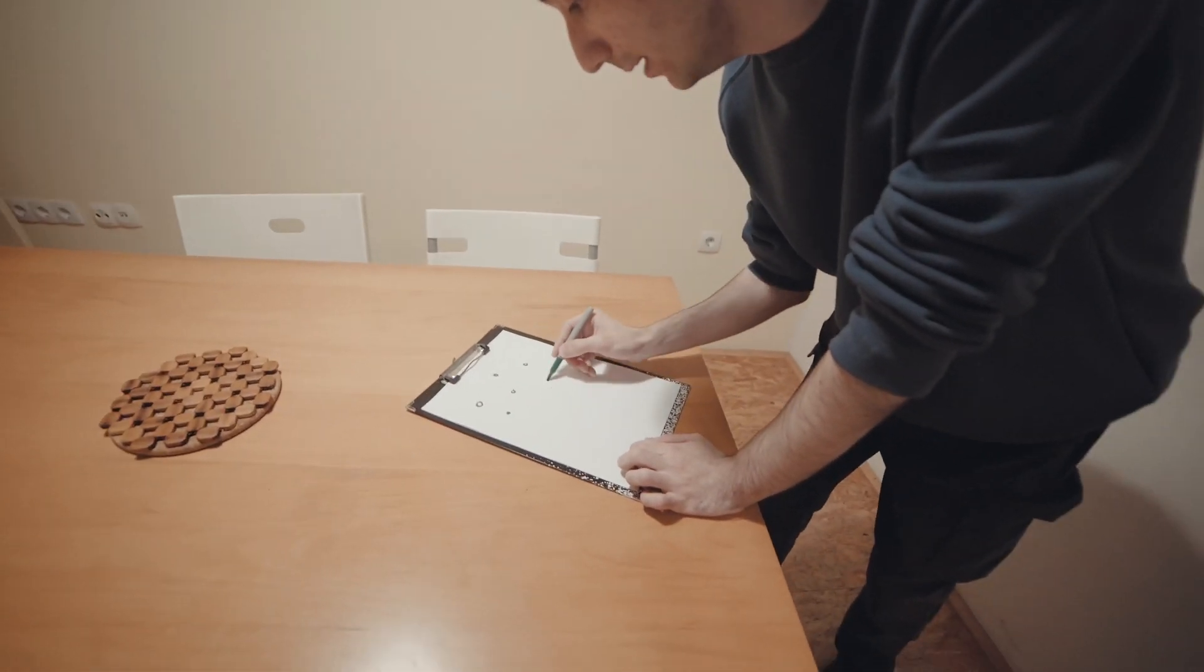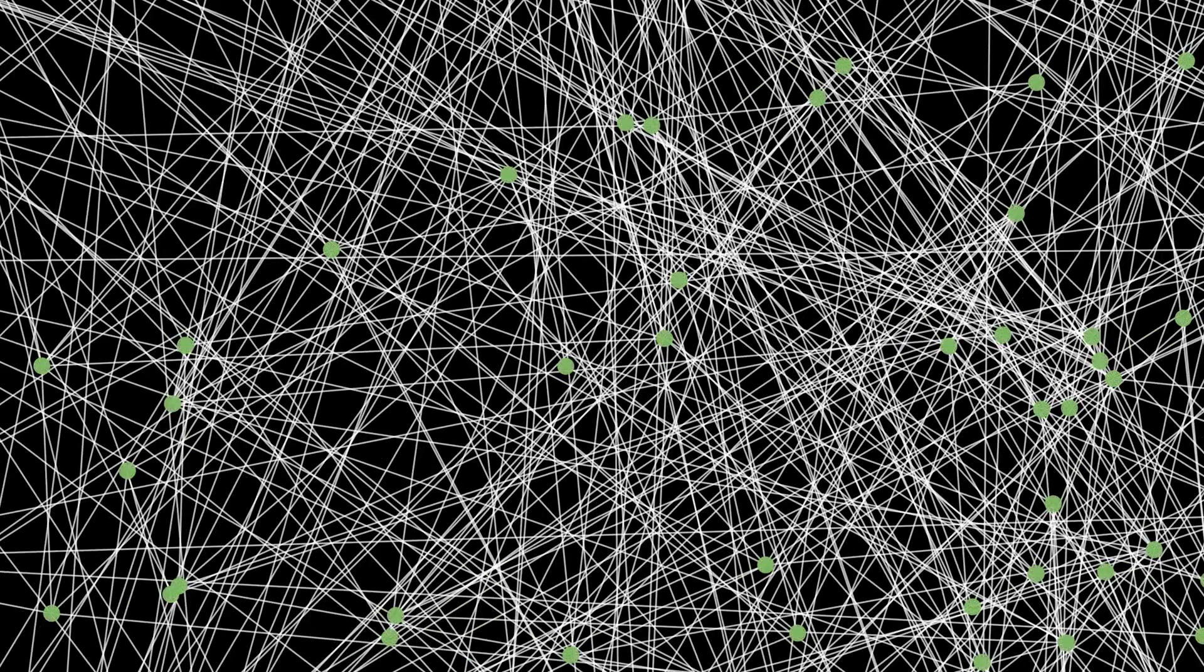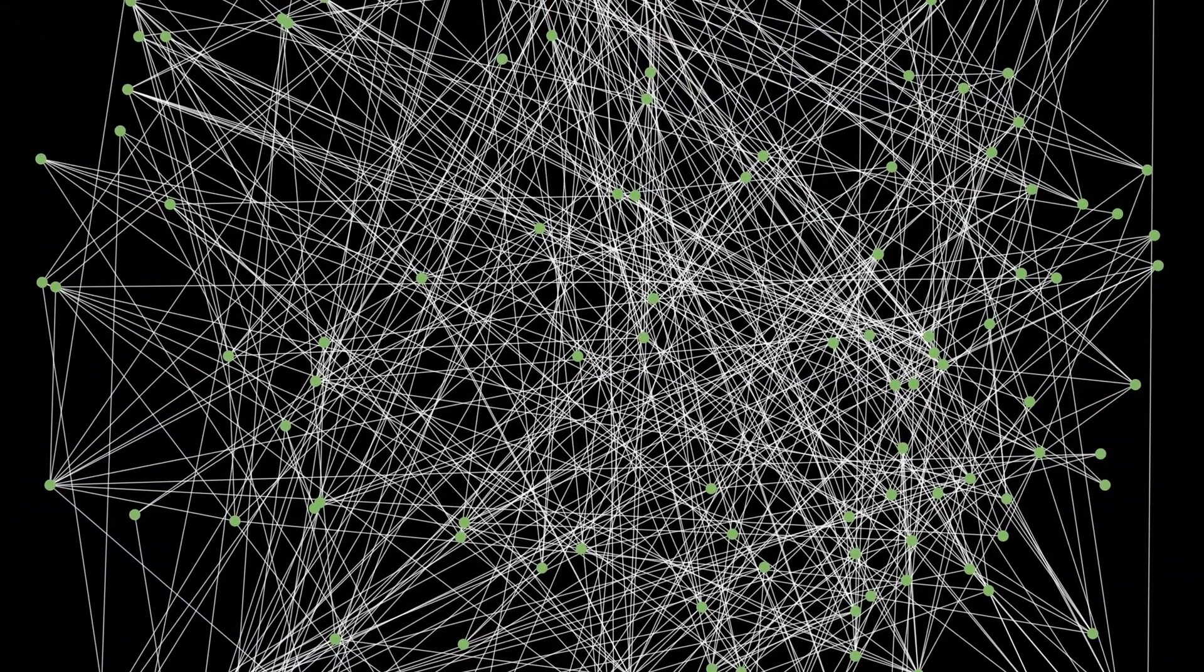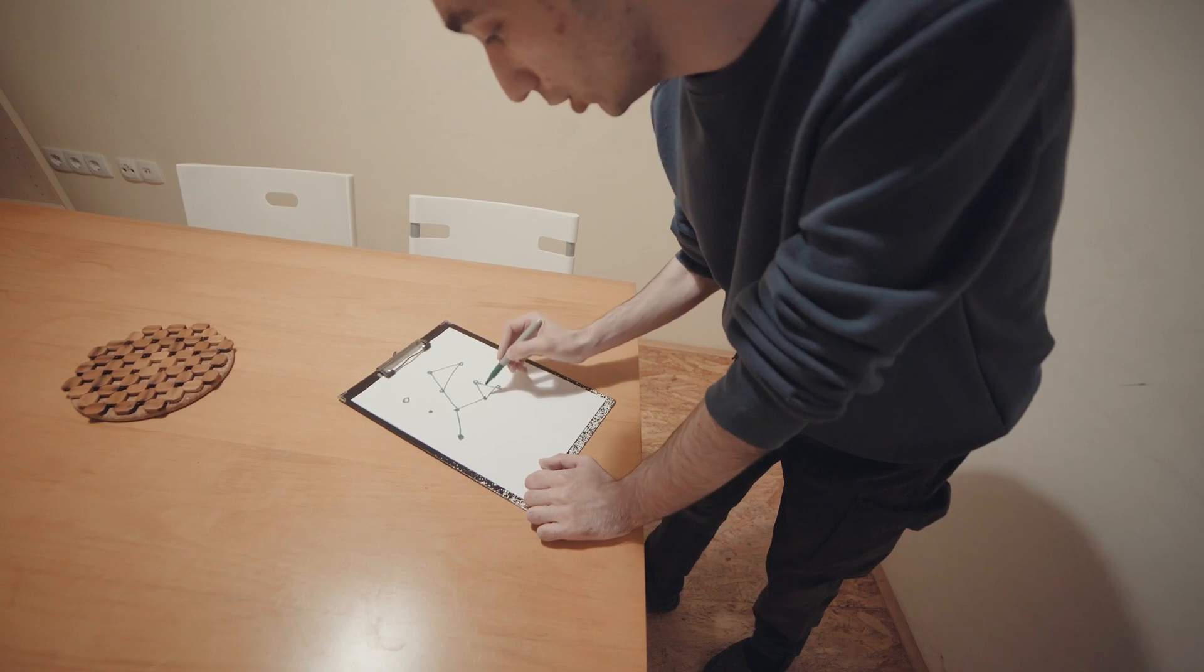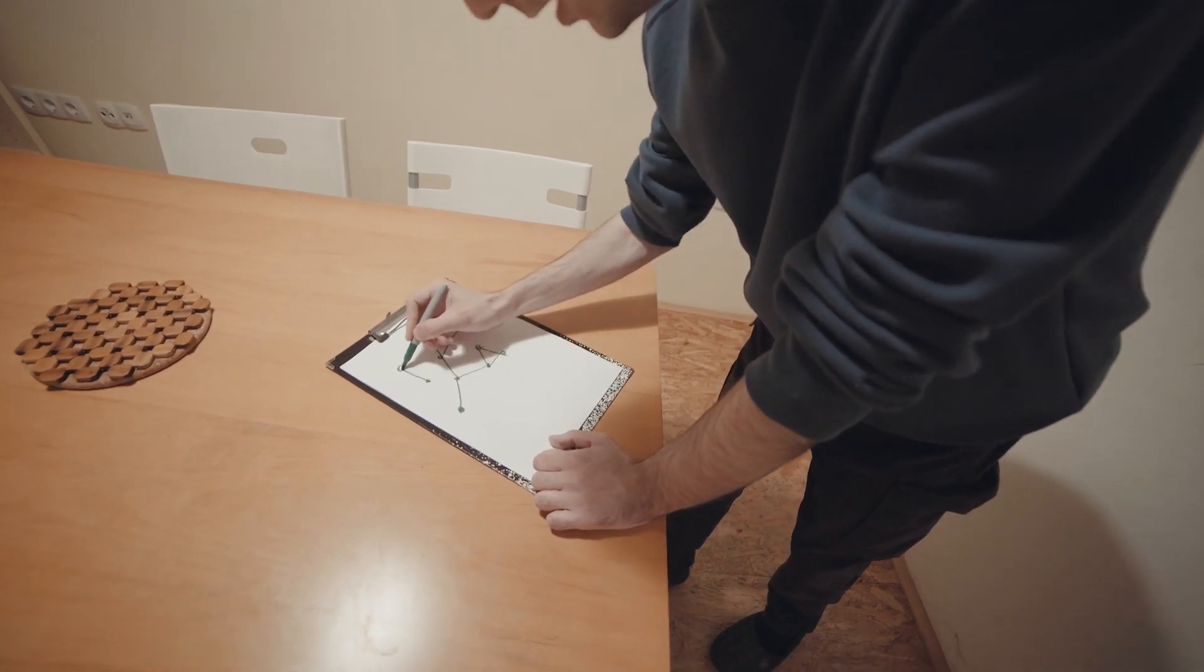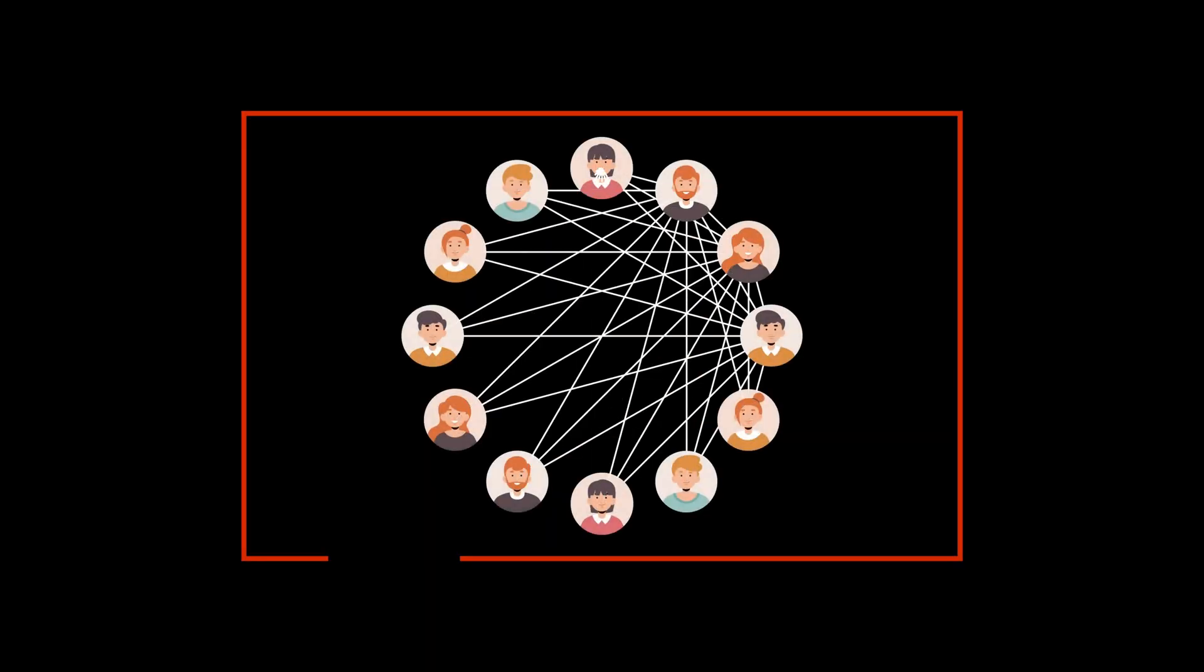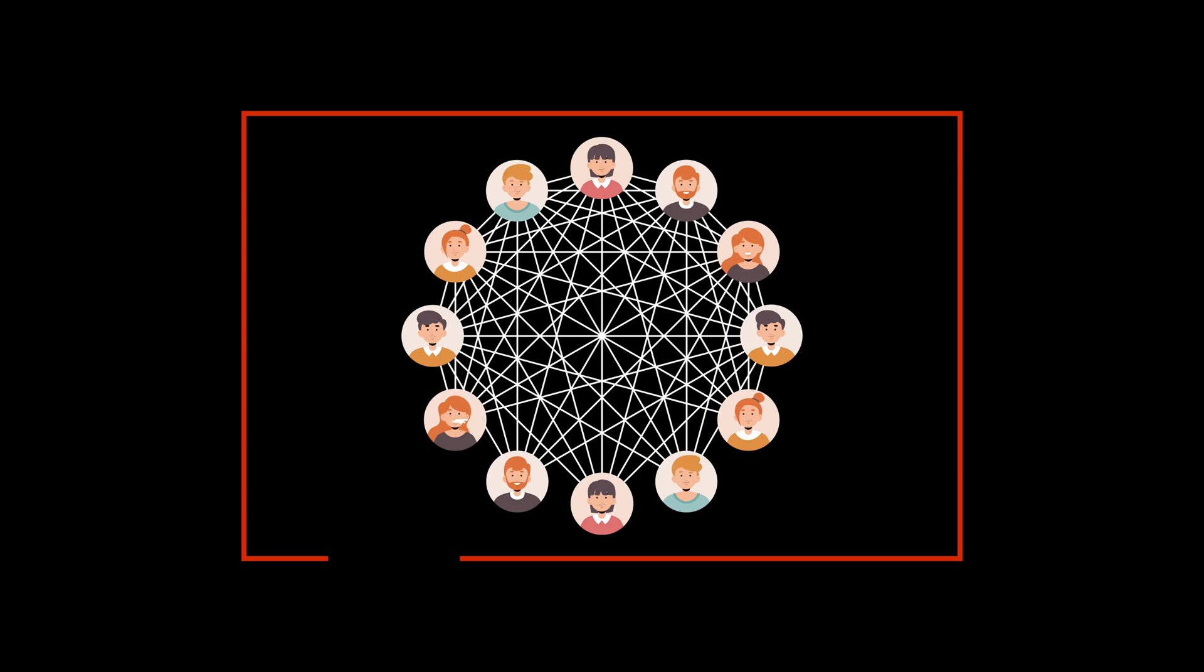We can draw all 8 billion people and all of the connections we are going to represent by edges. For example, these two know each other, these two know each other, these two know each other, like that. But we are looking for the maximum amount of people such that everyone knows everyone else.